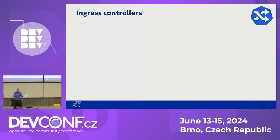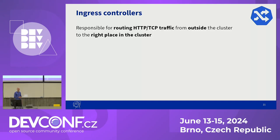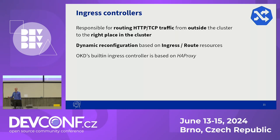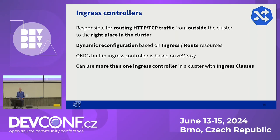Now, let's get to the heart of the whole operation: the ingress controllers. In Kubernetes, an ingress controller is responsible for routing traffic from outside the cluster to the right place inside the cluster. This is done by dynamically reconfiguring itself based on the ingress or route objects that it's watching. OKD's built-in ingress controller is based on HAProxy, a battle-tested reverse proxy and load balancer, but there are many other popular implementations out there such as the NGINX ingress controller or Traefik. You can use more than one ingress controller within your cluster — either using different types such as combining HAProxy, NGINX, and Traefik, so that you can choose the right tool for the right job depending on which workload you have.